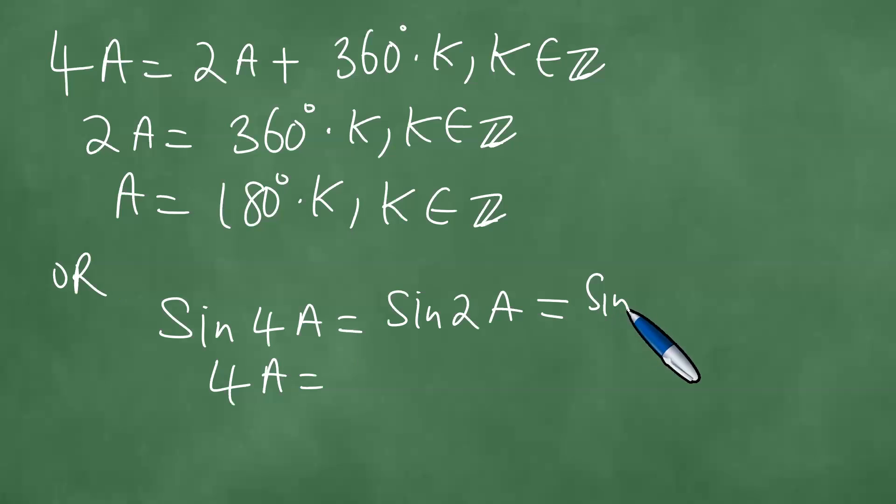This is the same as sin(180 degrees - 2A). So this is 180 degrees minus 2A plus 360 degrees times k, where k is in Z.